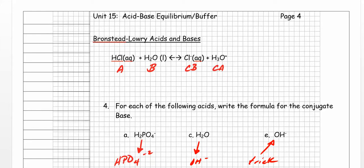Now I want to move on to Bronsted-Lowry acids and bases. Remember that a Bronsted-Lowry acid is a proton donor and a Bronsted-Lowry base is a proton acceptor. We've got hydrochloric acid in water producing Cl⁻ and H₃O⁺. HCl donates a proton — it goes from HCl to Cl⁻, which makes hydrochloric acid the Bronsted-Lowry acid. Water gains a proton — it becomes H₃O⁺ — so H₂O is the Bronsted-Lowry base.